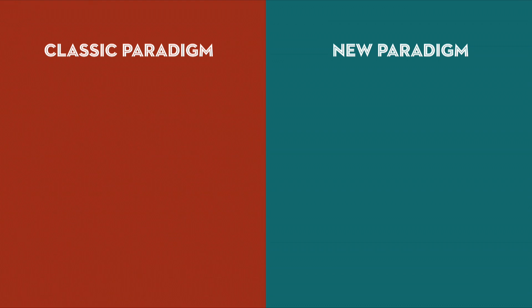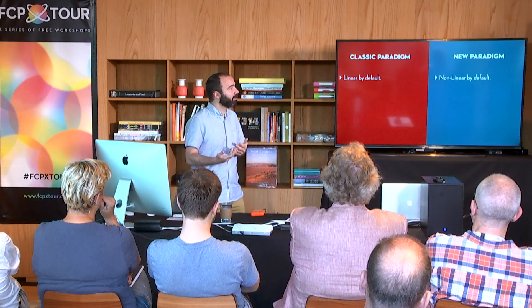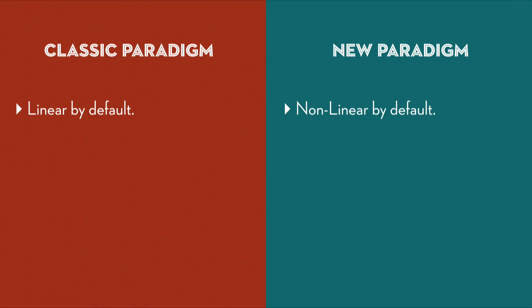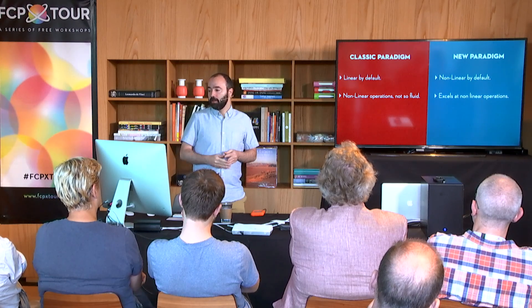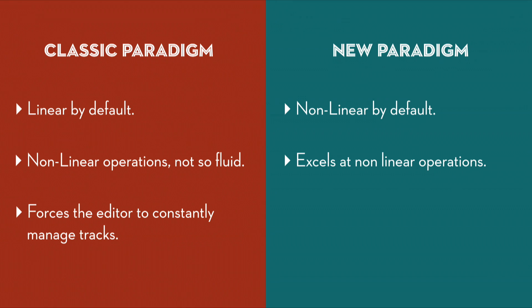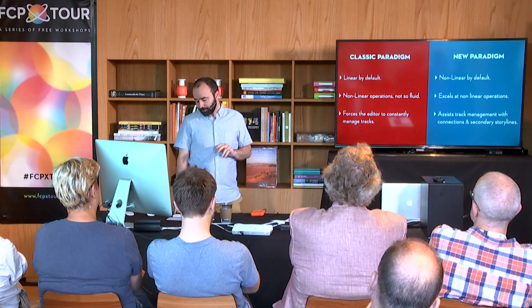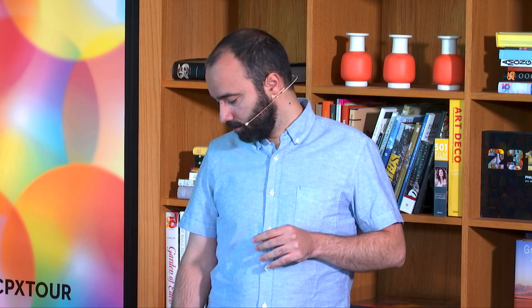To summarize the main differences between the two paradigms: the classic paradigm behaves linearly by default, while Final Cut behaves in a non-linear fashion by default — doing ripple and ripple trim operations by default. The classic paradigm is not fluid at handling non-linear operations like swapping shots or doing ripple trims, and the new paradigm excels at that. The classic paradigm forces the editor to constantly manage tracks throughout the entire editing process, while Final Cut assists track management with connections and secondary storylines. For me, this is a revolution in creative editing.